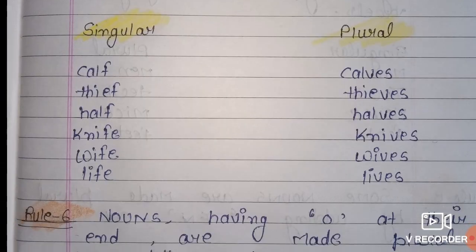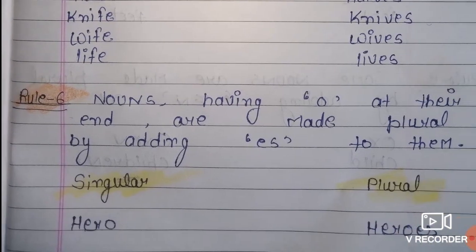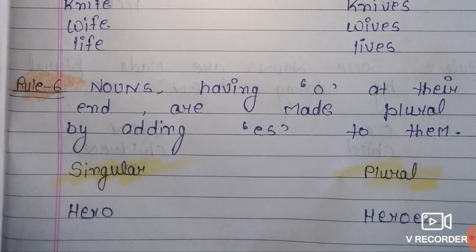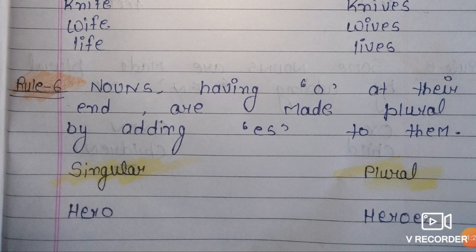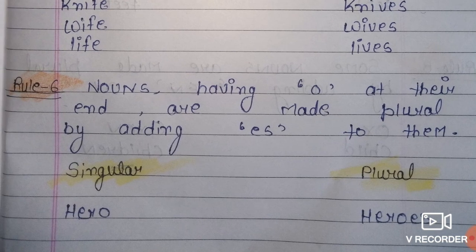Second example is Thief — T, H, I, E, F. Here the word ends with F, so we have to use VES in place of F, giving us Thieves. Nouns having O at their end are made plural by adding ES to them.